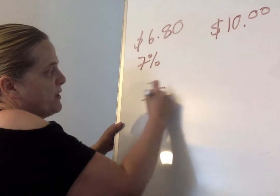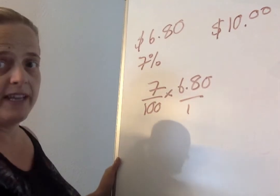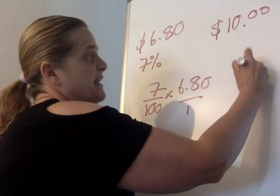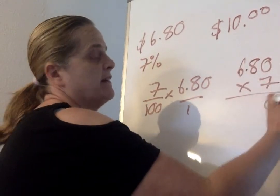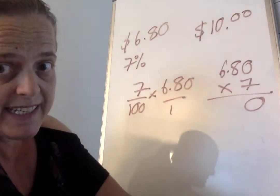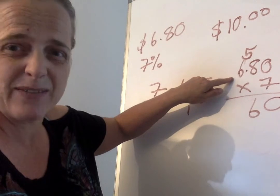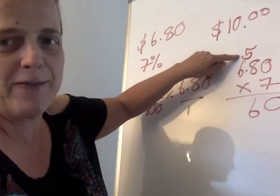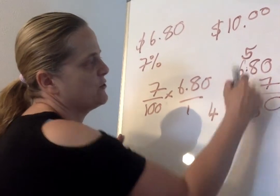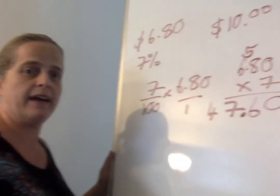So we have to find 7% of $6.80. So 7 over 100 times $6.80 over 1, okay? So we are having to do $6.80 times 7. So off to the side, do your multiplication. 7 times 0 is 0. 7 times 8 is 56. 7 times 6, I hate the 7 times table, is 42. 42 add 5 is 47. Now, put the decimal in. Okay, it's right here. 2 after the decimal, 2 after the decimal.